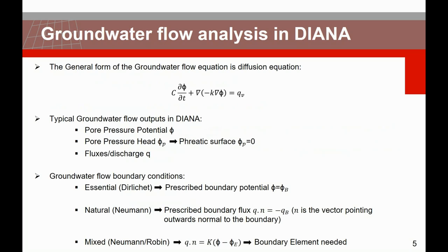The general form of the groundwater flow equation is a diffusion equation where C is storativity, K is hydraulic conductivity, and QV is a source or sink. In the steady state case this simplifies since the time dependency term is dropped. Typical outputs in Diana are the pore pressure potential phi, the pore pressure head phi_p (used to determine the phreatic surface), and the flux discharge Q.